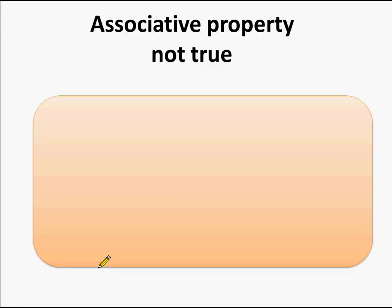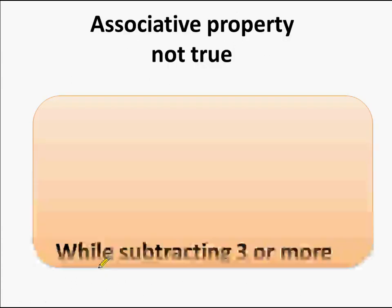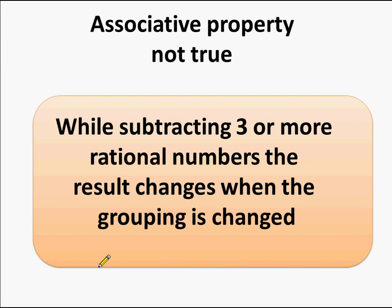The answer is not the same when we change the grouping. So we can say while subtracting 3 or more rational numbers, the result changes when the grouping is changed. Therefore, the associative property does not hold true for subtraction of rational numbers.